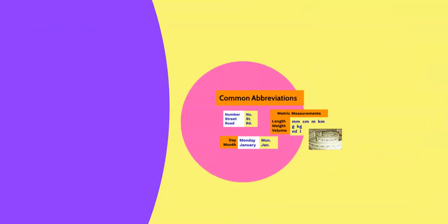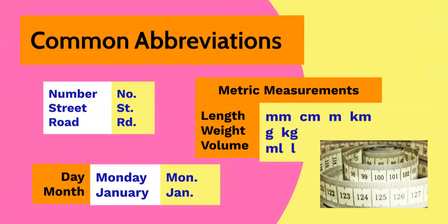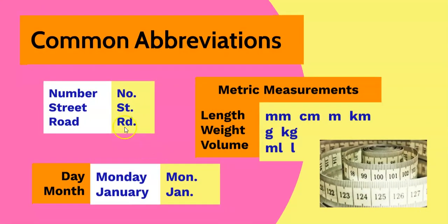Now let's look at some common abbreviations. Numbers, streets, roads, days of the week, and months all need a full stop when we abbreviate them. However, we don't use full stops when we abbreviate metric measurements.